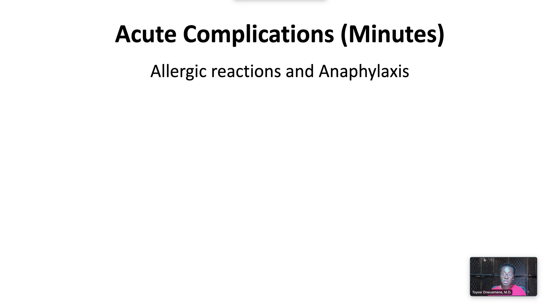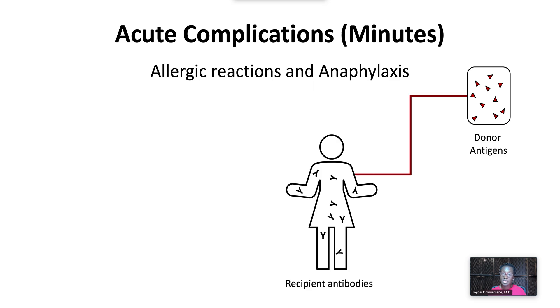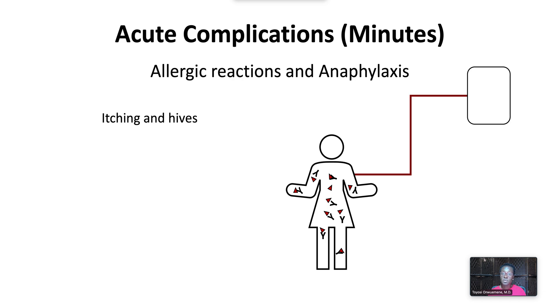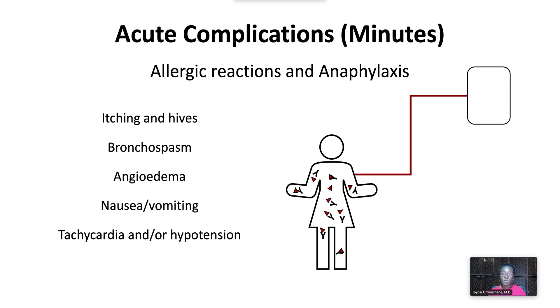Acute complications include allergic or anaphylactic reactions, which occur due to donor antigens in the transfused product that are recognized by antibodies in the recipient. Allergic reactions due to IgE antibodies cause itching and hives and tend to be less severe. Severe anaphylactic reactions can occur, especially in IgA-deficient recipients with pre-existing IgA antibodies. Symptoms include bronchospasm and respiratory distress, angioedema, nausea and vomiting, and tachycardia and/or hypotension. Patients with recurrent allergic reactions should receive washed products.